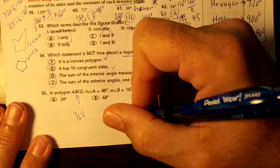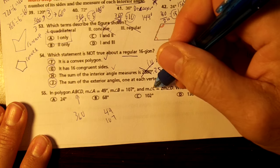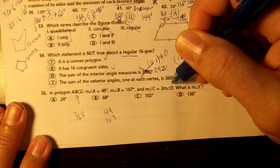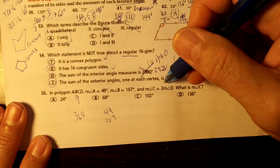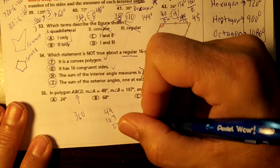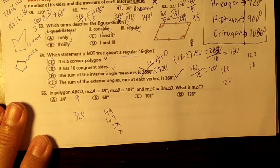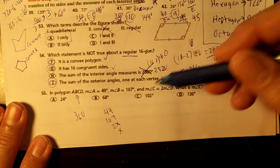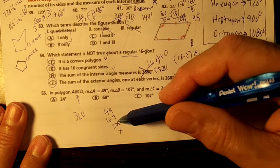So we have 49. Angle B is 107, and the measure of angle C is twice the measure of angle D. So we're going to have 2X and X. Okay, so we have these two unknown angles, right? One of them is twice as big as the other.